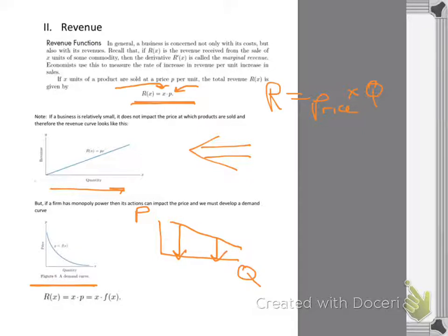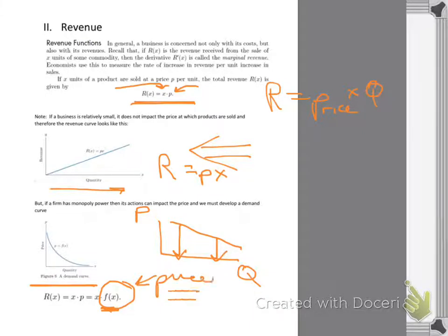In a monopoly situation your demand curve is the classic downward-sloping curve from economics. In that case price is a function of what you sell, not a fixed constant. So revenue is still price times quantity, but in case one price is a constant times x, while in case two price is itself a function of x — a completely different scenario. Keep that distinction straight.